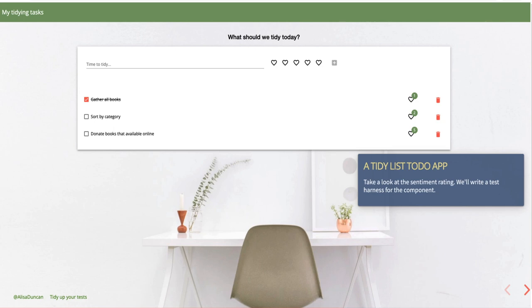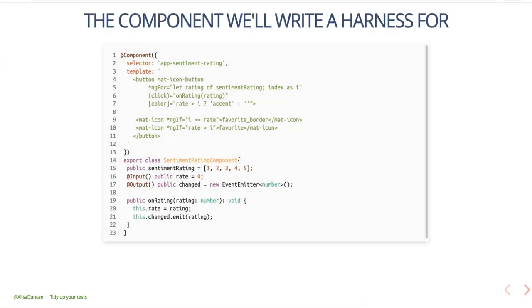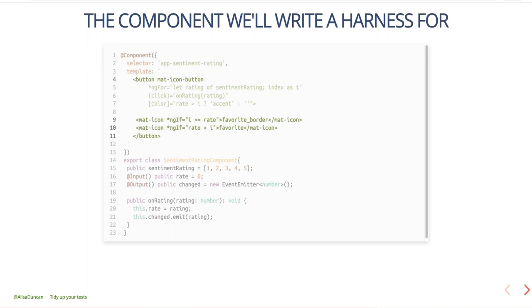Now we'll look at some of the bells and whistles — the top part of the app. How this works is you put in the task you want to work on, and then there's a sentiment rater. We're busy people, so we might need to optimize by the satisfaction we get from completing a task. So if you had a task for tidying up a unit test, it would be a five-heart rating. The component we'll write the test harness for is a pretty small component — it has the selector app-sentiment-rating and a template that's just a bunch of mat-icon buttons that are either filled or unfilled hearts based off of the sentiment rating.